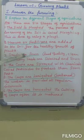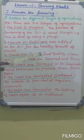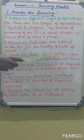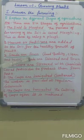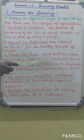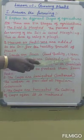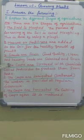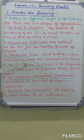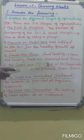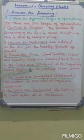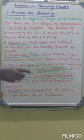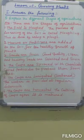Third: seeds are sown. Good quality, clean and healthy seeds are selected and sown. Fourth: the crops are sprayed with chemicals called pesticides to protect them from pests.